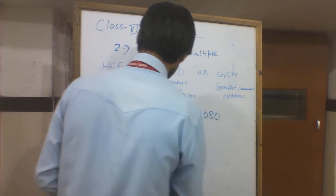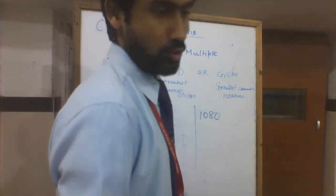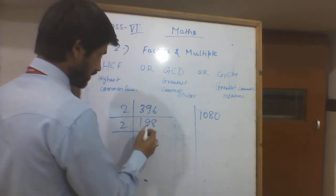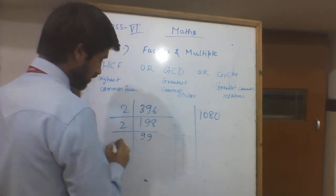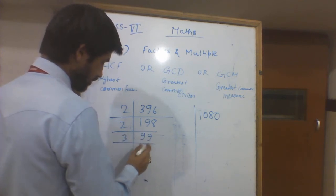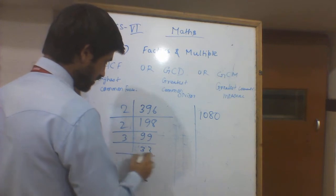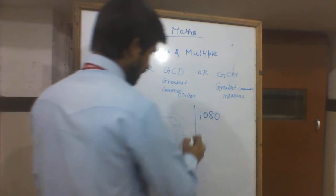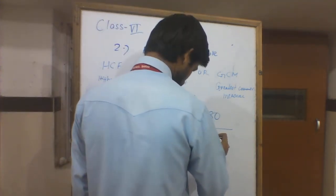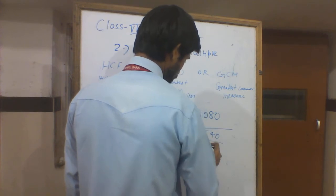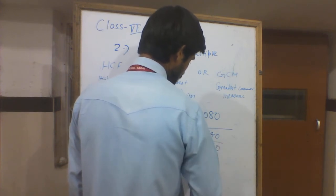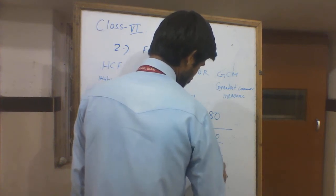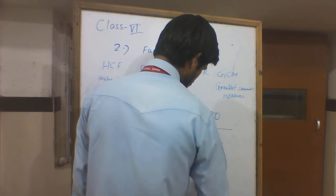Next example with three numbers: 396, 1080, and 270. For 396, the factors are 2, 2, 3, 3, 11. For 1080, the factors are 2, 2, 2, 3, 3, 3, 5. For 270, the factors are 2, 3, 3, 3, 5.